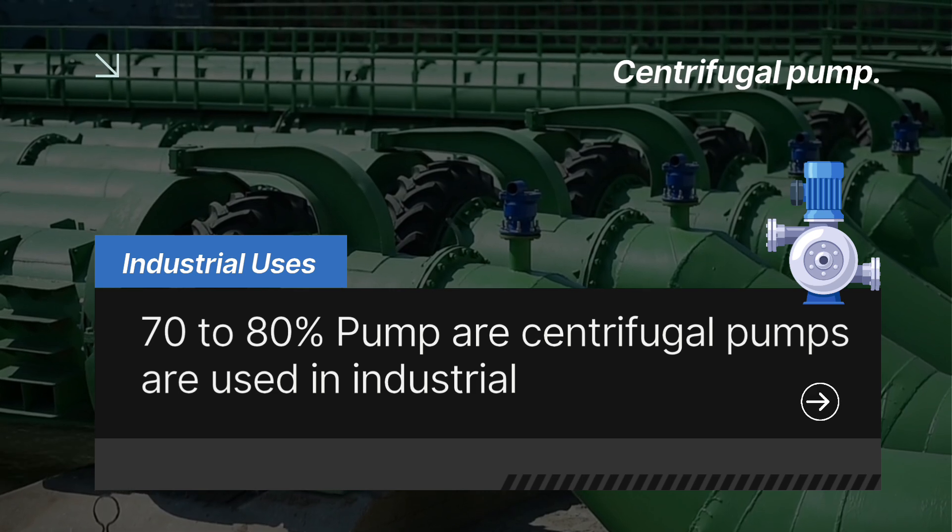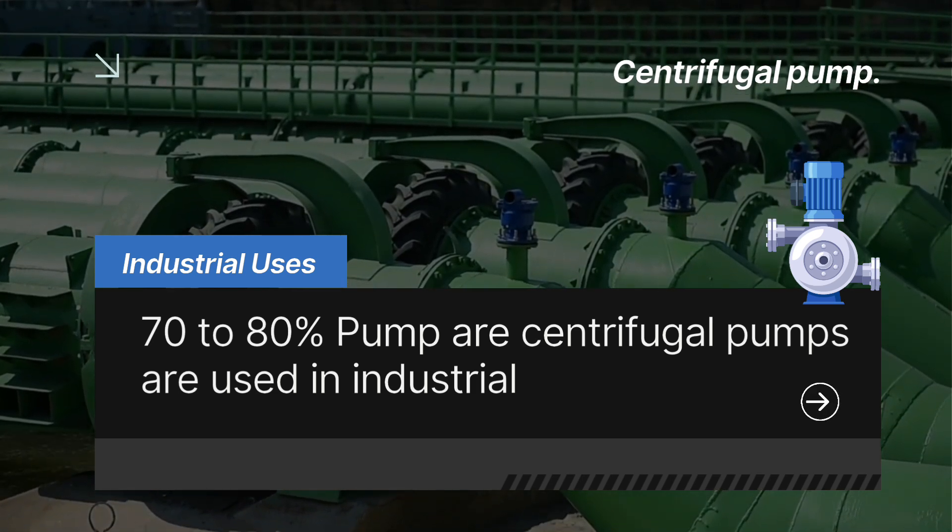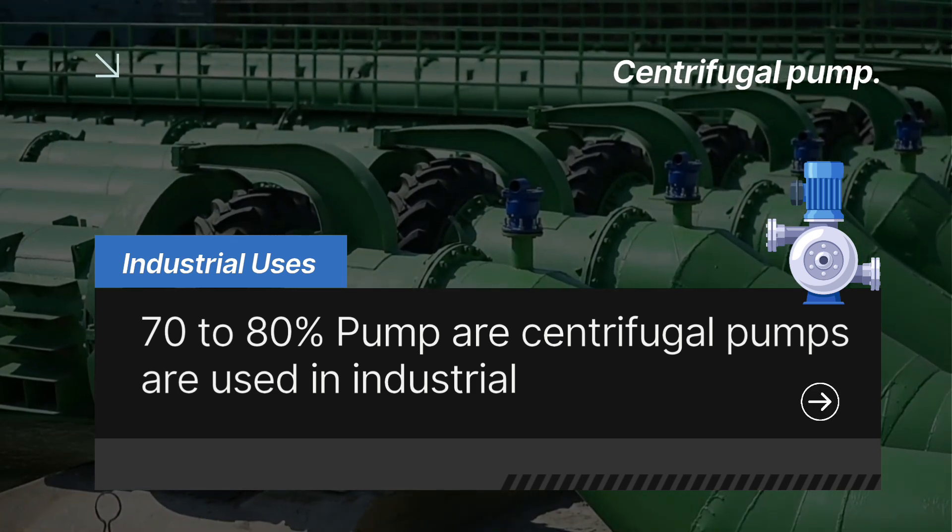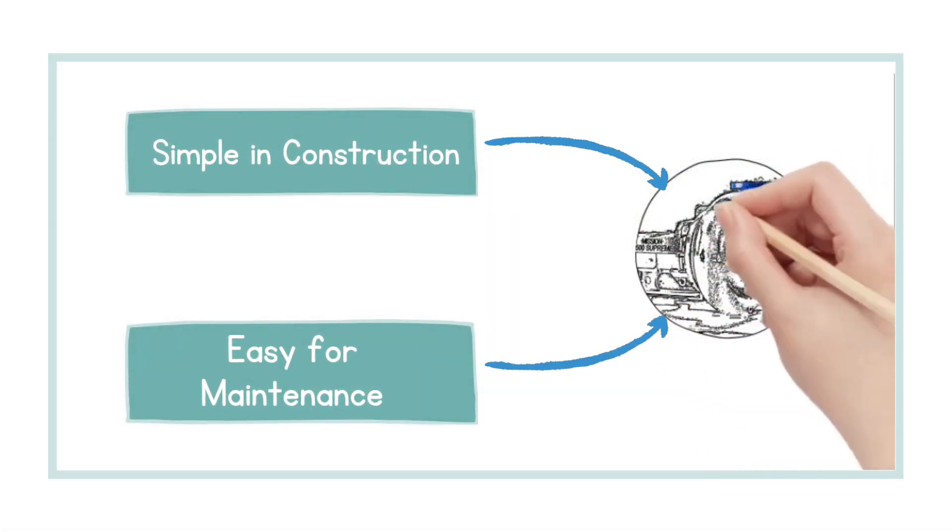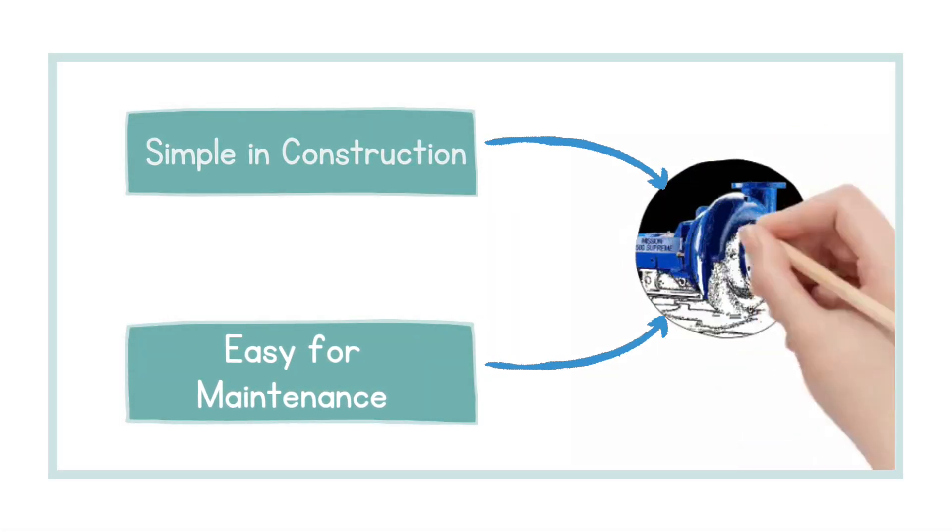In industry, 70 to 80 percent of the pumps are centrifugal pumps. Why? Because they are simple in construction, easy for maintenance, etc.